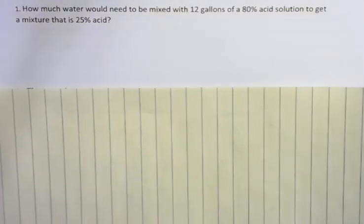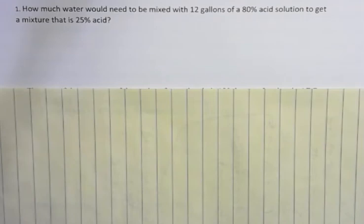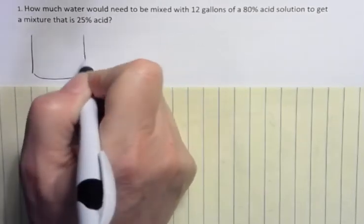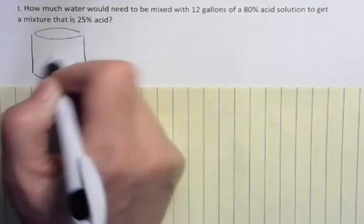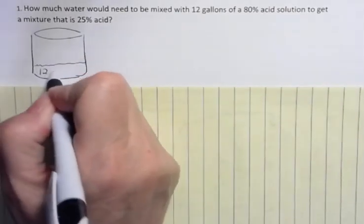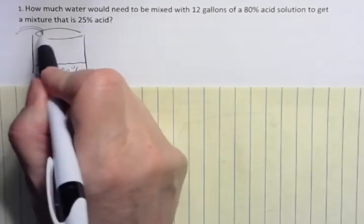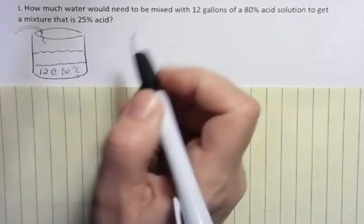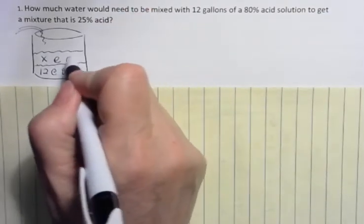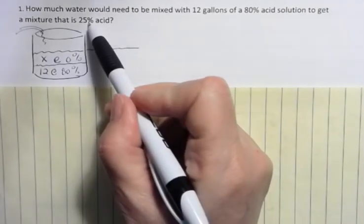How much water would need to be mixed with 12 gallons of an 80% acid solution to get a mixture that is 25% acid? So what we want to know is here, if we had some container and we had some acid solution that was 80%, we have 12 gallons at 80%. How much would we have to add if we wanted to put water in there? How much would we have to add? We're going to call that X. And how much acid is in water? Well, hopefully 0%.